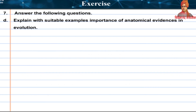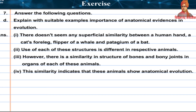Explain with suitable examples the importance of anatomical evidences in evolution. There doesn't seem any superficial similarity between a human hand, a cat's foreleg, flipper of a whale, and patagium of a bat. The use of each of these structures is different in respective animals. However, there is a similarity in the structure of bones and bony joints in the organs of each of these animals. This similarity indicates that these animals show anatomical evidence of evolution from common ancestors.